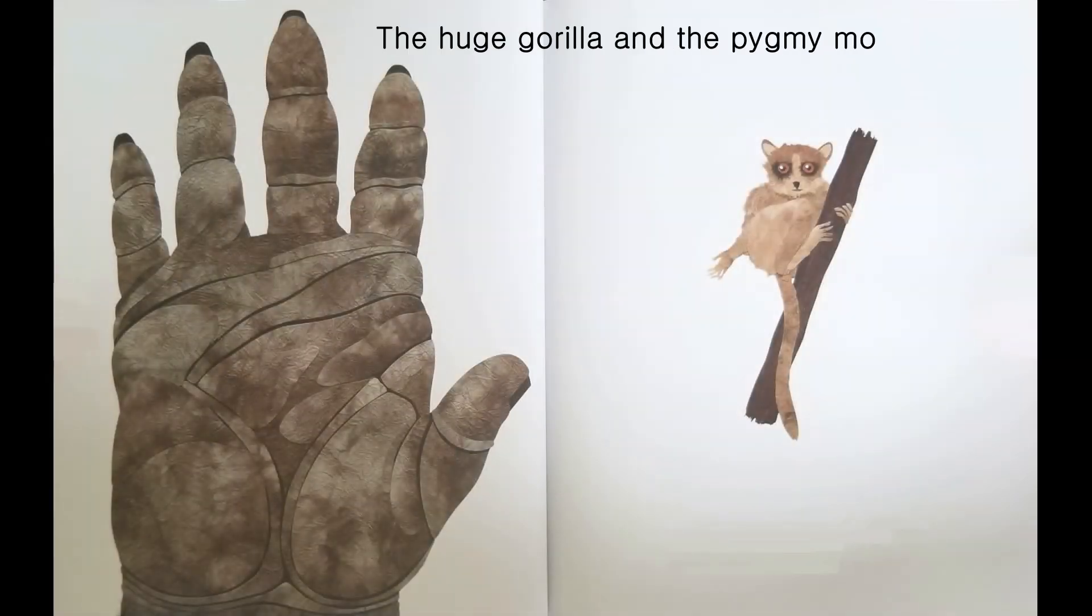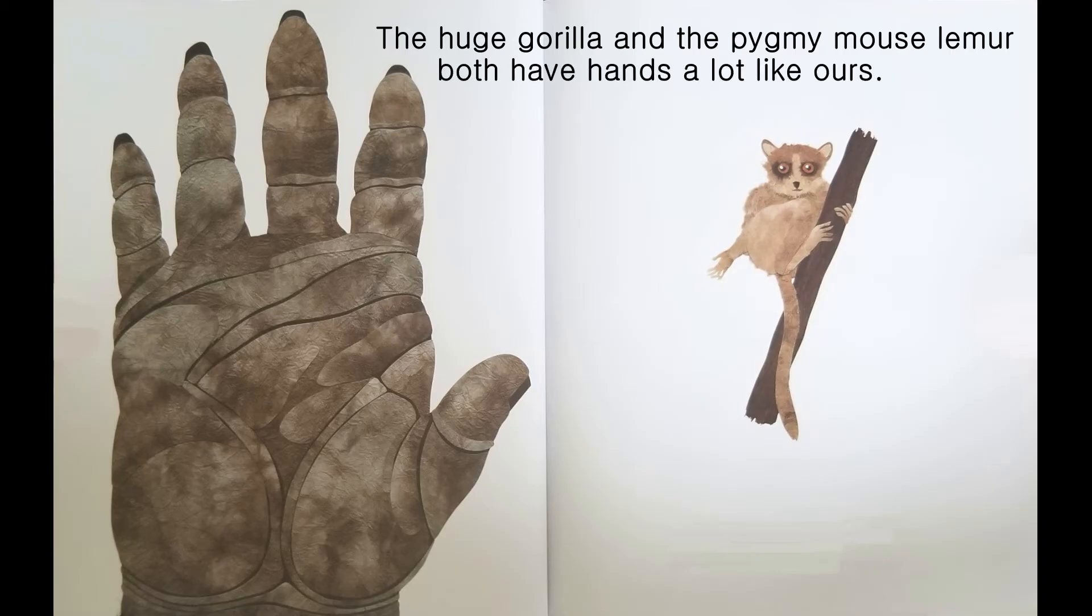The huge gorilla and the pygmy mouse lemur both have hands a lot like ours. Gorilla 5 and a half feet tall, 600 pounds. Mouse lemur 2 and a half inches tall, 1 ounce.